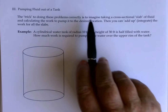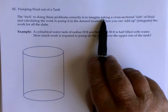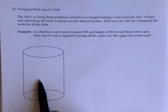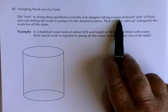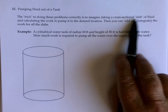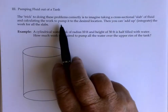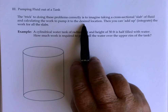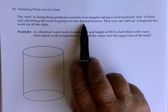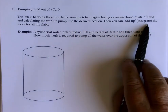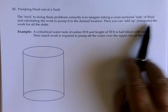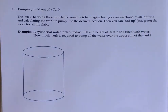Our approach, no matter what shape we have — starting with a cylinder here — is to imagine taking cross-sectional slabs of fluid and calculating the work to pump each slab to its desired location. We'll then integrate the work to calculate the total work for all the slabs.